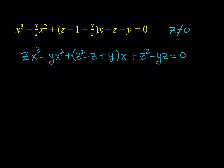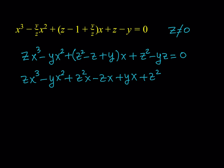So we'll get zx³ minus yx² plus z² minus z plus y, multiplied by x, plus z² minus yz, is equal to zero. This equation is still complicated — there are three variables and they're all kind of mixed up. But again, this is a cubic in x and we want to solve for x. We're going to expand everything and then I'll show you the method.